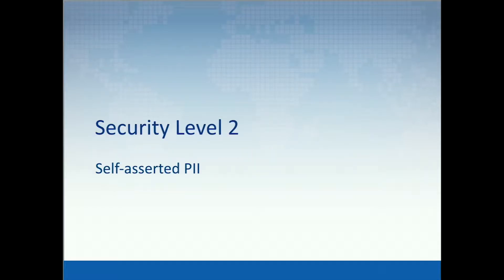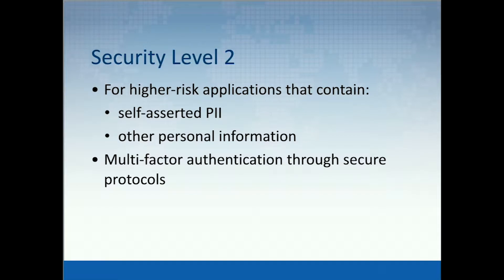Moving on to security level two — this is for self-declared personally identifiable information or any other type of information that can trace back to a certain user. For this level, the authentication assurance must provide a high confidence that the claimant is bound to the subscriber's account. This needs to be done through the possession of two valid authenticators, i.e., multi-factor authentication.